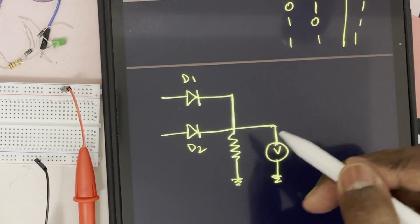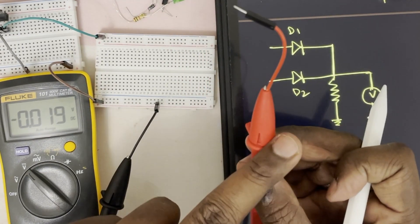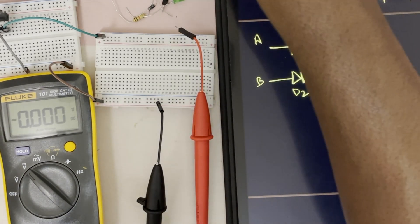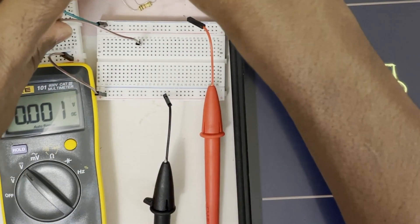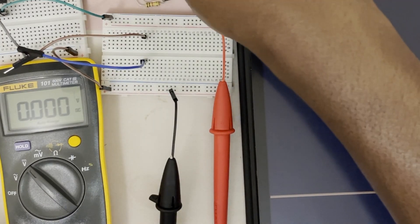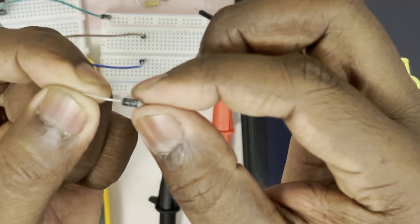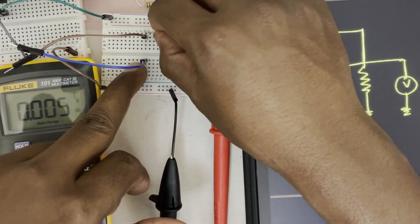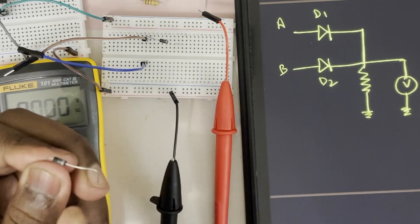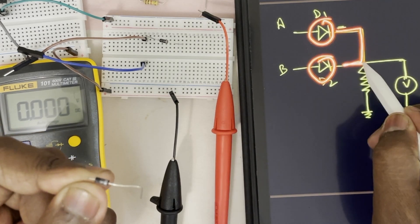First I will show you with the voltmeter and then I will do it with the LED. For the voltmeter, I have here a multimeter — the positive and the negative. This is the A terminal and this is the B terminal. I need to make two switches A and B. Now I need to connect two diodes. From the A terminal, I should have one diode. The positive side will be connected with A. This side is positive and this side is negative. Similarly, the positive of the second diode will be connected with the B terminal and the negative of D1 and D2 should be connected together at a single point.